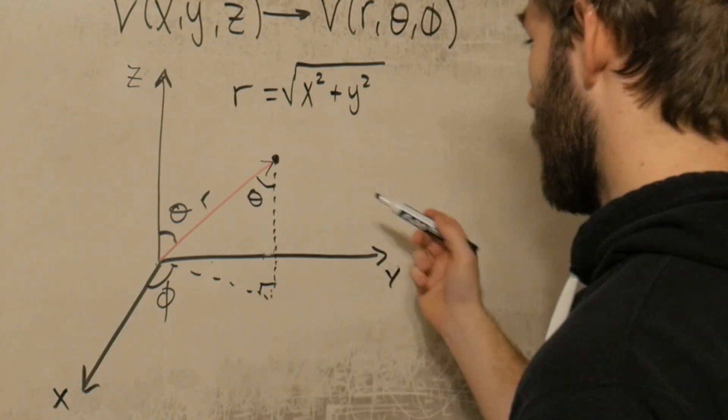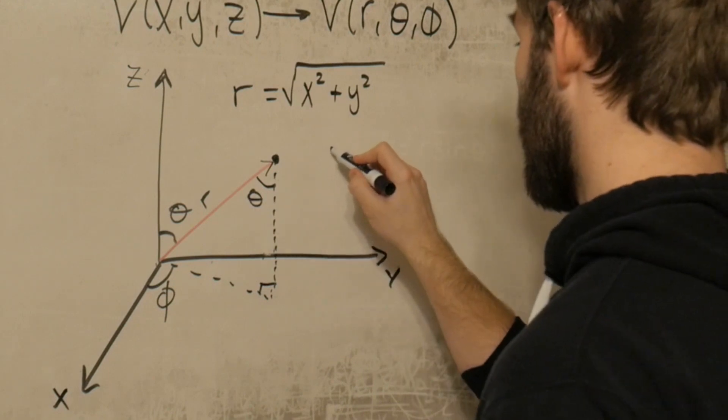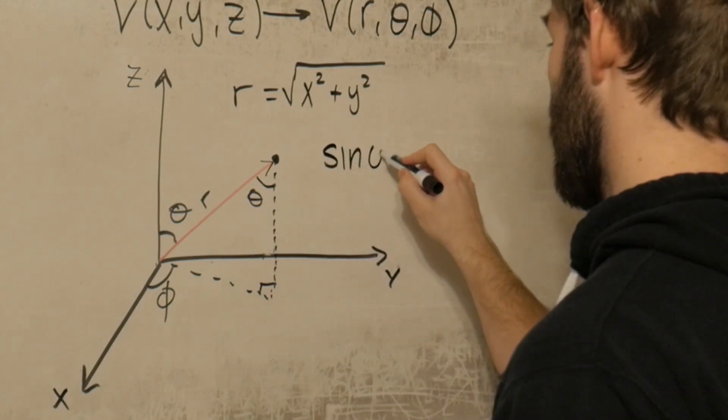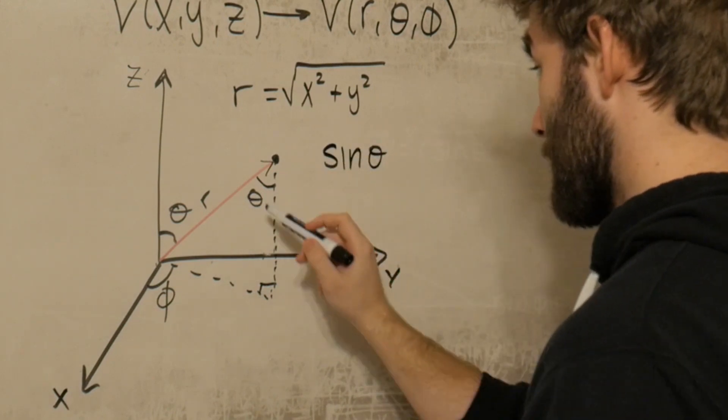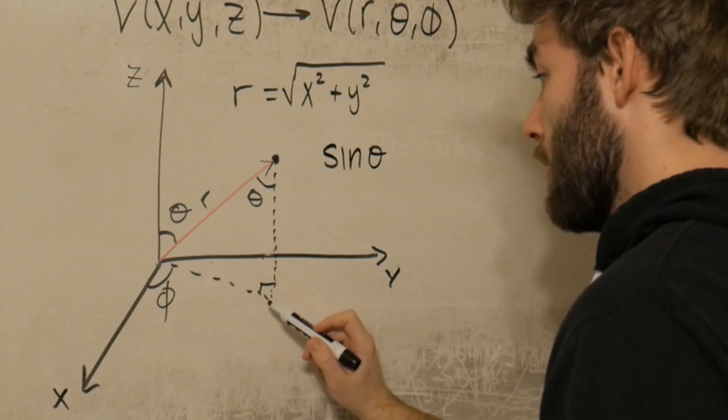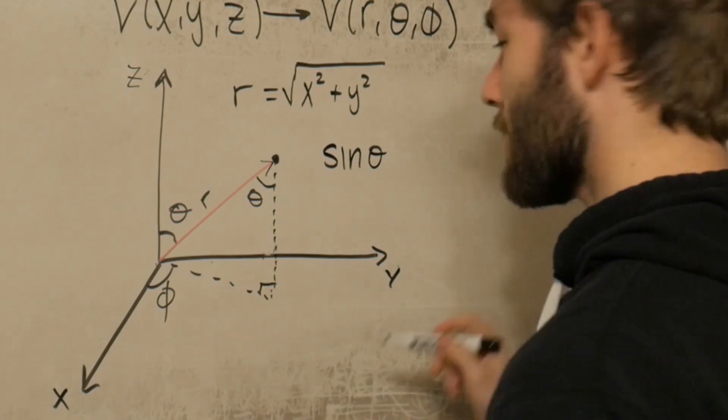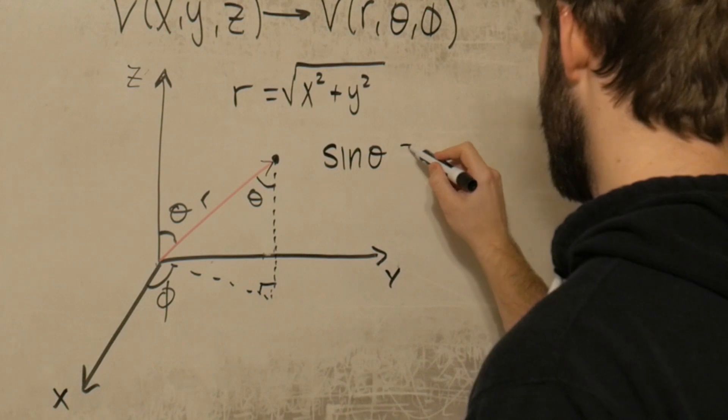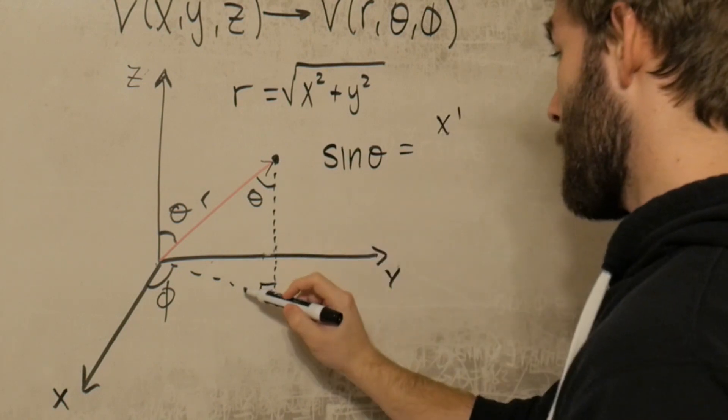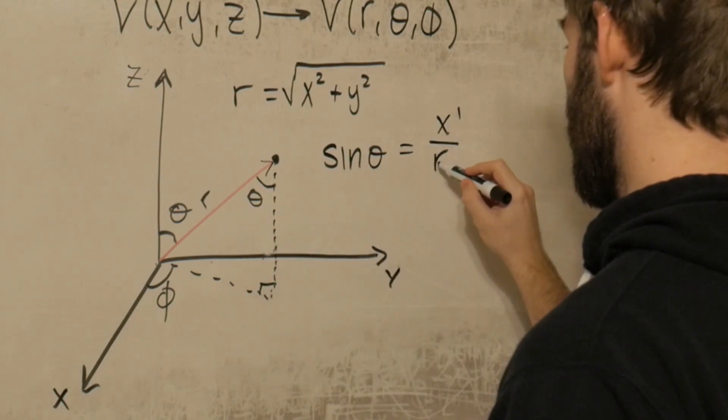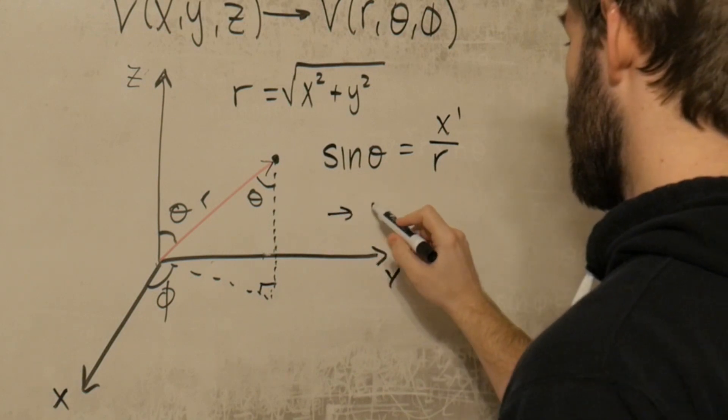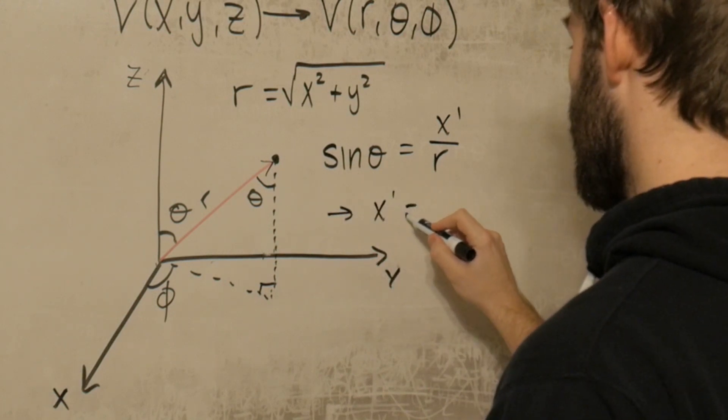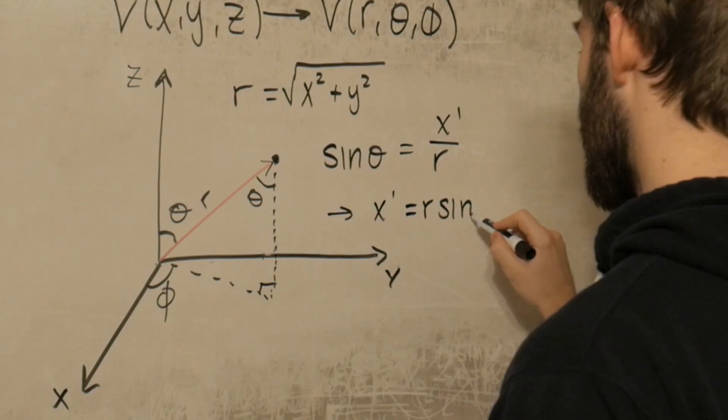And what we can do right now is we can find out what the sine of theta is. Sine of theta is just opposite over hypotenuse, so that's going to be this distance here, which we haven't named yet. And I'm just going to call it x prime. So x prime, opposite over hypotenuse, which is r. And then this brings us to x prime is equal to r sine theta.